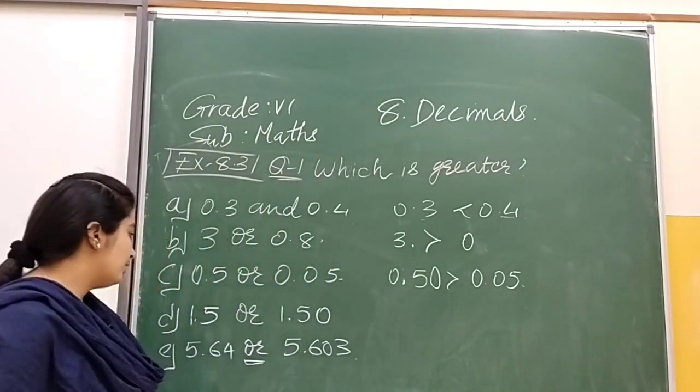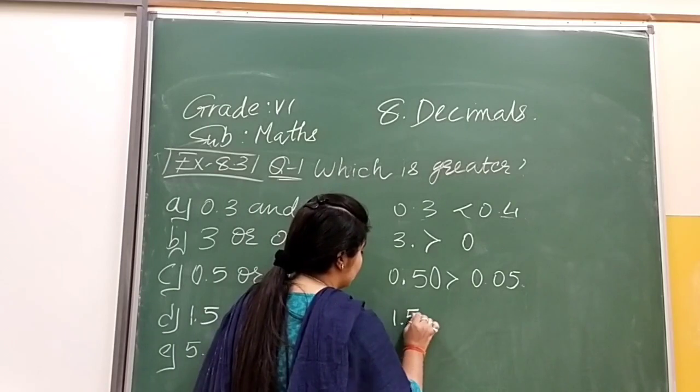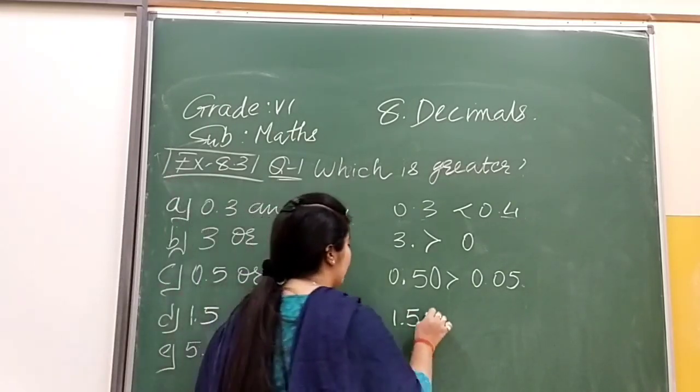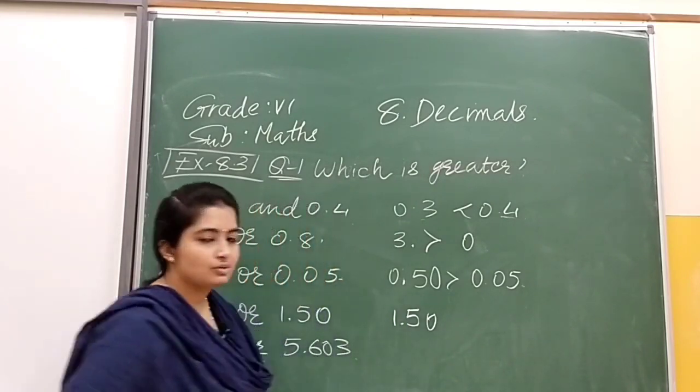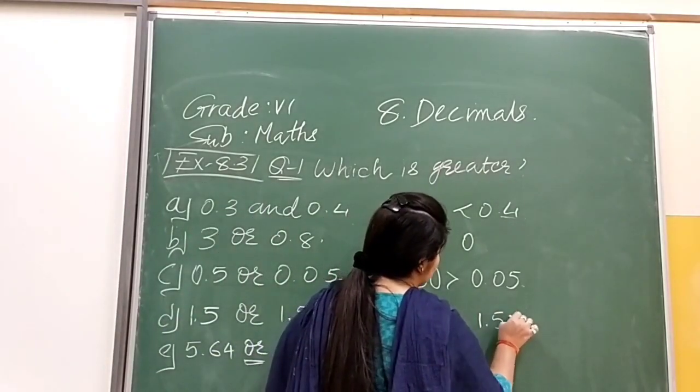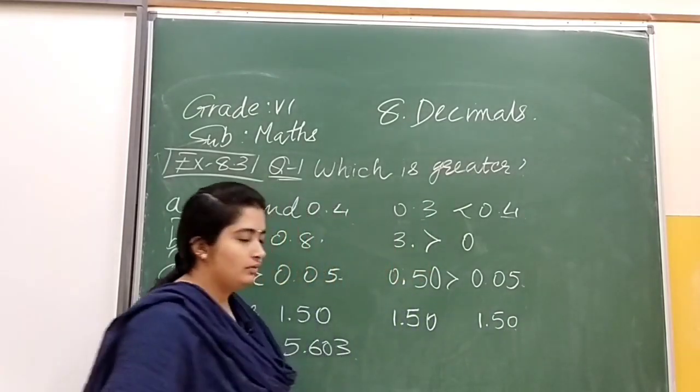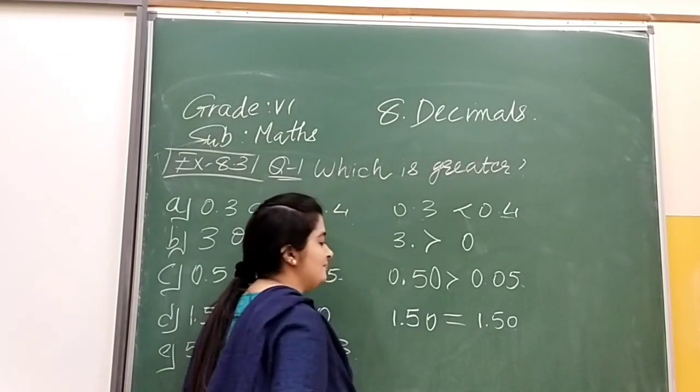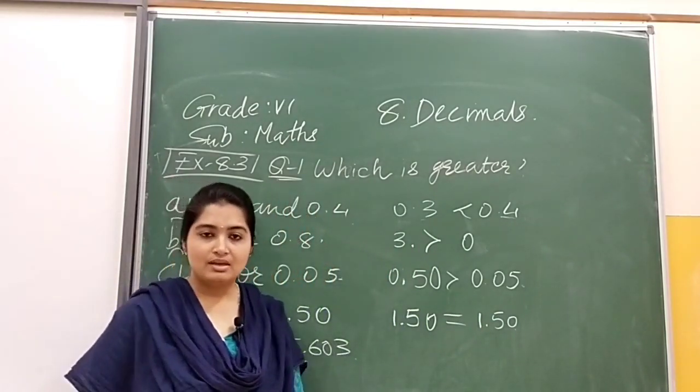Here we have 1.5 and 1.50. We have discussed, as we discussed above, that if we put a zero here, the value remains as it is. So here we can see that both numbers are the same. We cannot say less than or greater than. Both numbers are the same.